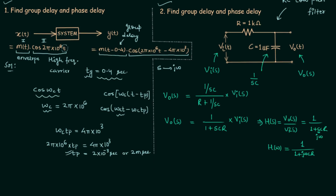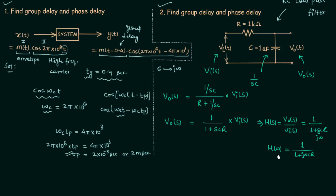Now we have the transfer function and we will obtain the phase of the transfer function. The phase of the transfer function is equal to negative tan⁻¹(ωRC).